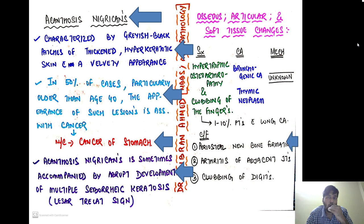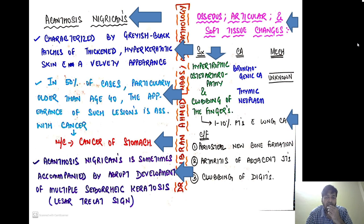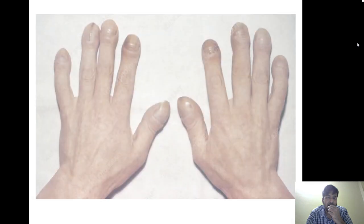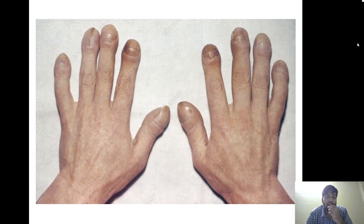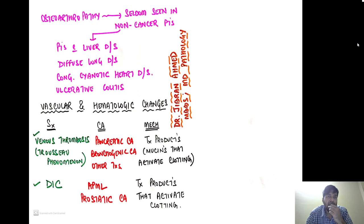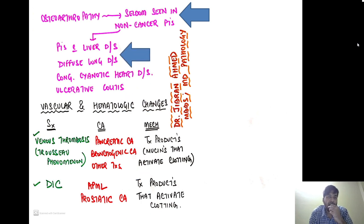Osseous, articular, and soft tissue changes: hypertrophic osteoarthropathy and clubbing of the fingers are classically seen in bronchogenic carcinomas and thymic neoplasms — mechanism unknown. It occurs in 1–10% of lung carcinoma patients and has a classic triad of periosteal new bone formation, arthritis of adjacent joints, and clubbing of the digits. Note that osteoarthropathy and clubbing can also be seen in non-cancer patients — such as those with liver disease, diffuse lung disease, congenital cyanotic heart disease, and ulcerative colitis.